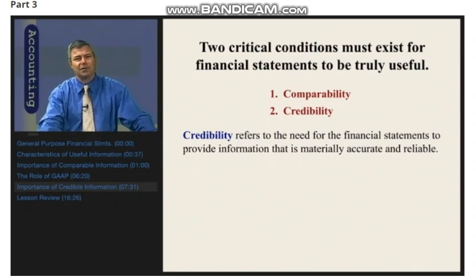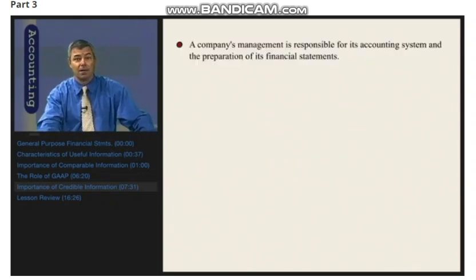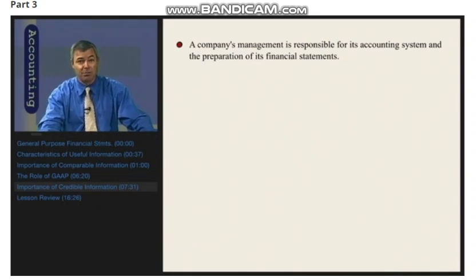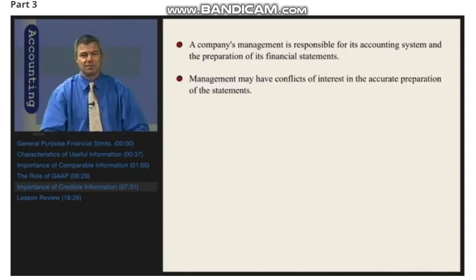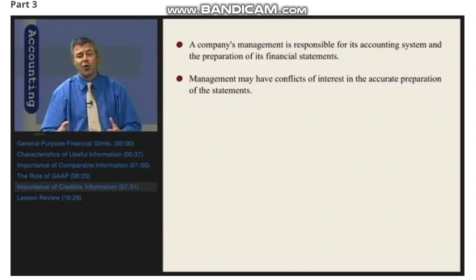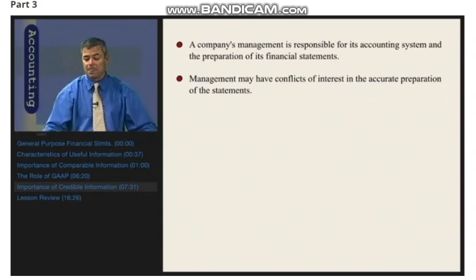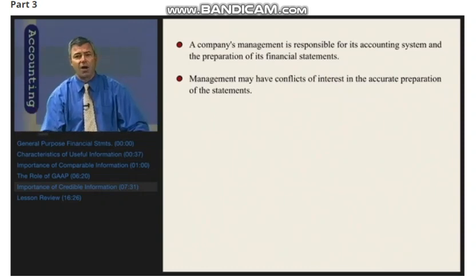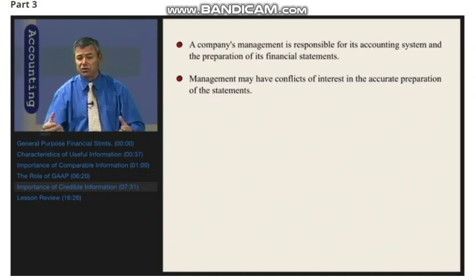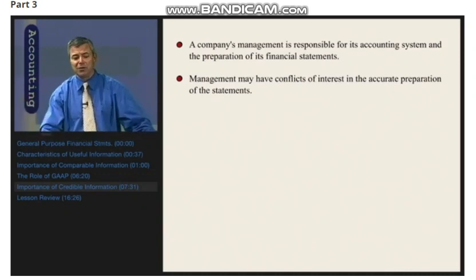Now, who is it that really prepares the financial statements and determines the amounts that will appear on them? A company's management is responsible for its accounting system and the preparation of its financial statements to be distributed to the public. The problem is that management may have conflicts of interest in the accurate preparation of those financial statements. In some companies, members of management are also shareholders. The president of Coca-Cola probably owns shares of Coca-Cola because they've been allowed the opportunity to buy those shares or given stock options as some form of compensation to create the incentive to act in the best interests of the owners.